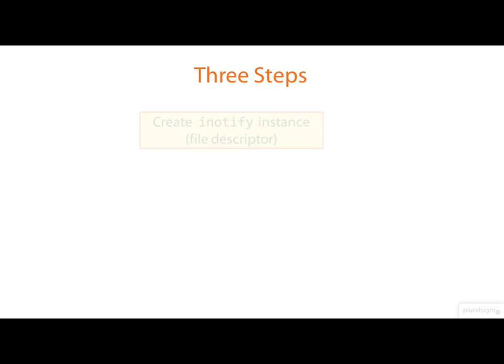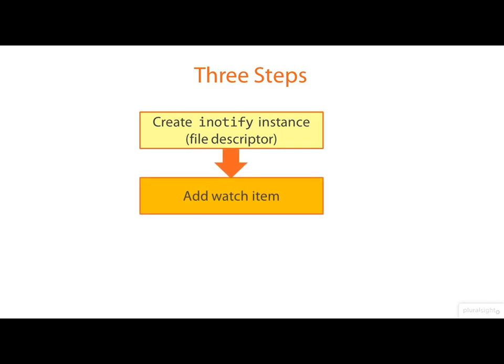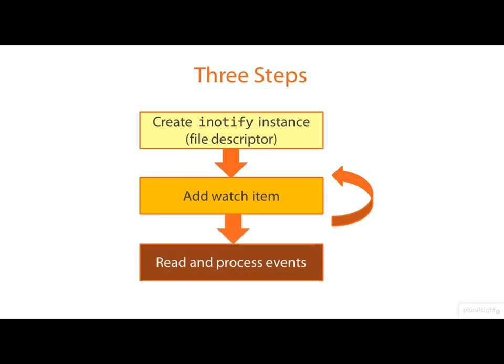There are basically three phases to this. First, you create an iNotify instance. Then you add watch items to it. A watch item basically says: I want to monitor this file, or this directory, for these kinds of changes. And typically you'll loop around here adding several watches. In the third phase, we read the events, and presumably do something with them — maybe write them to a log file, update our graphical directory listing, and so on.